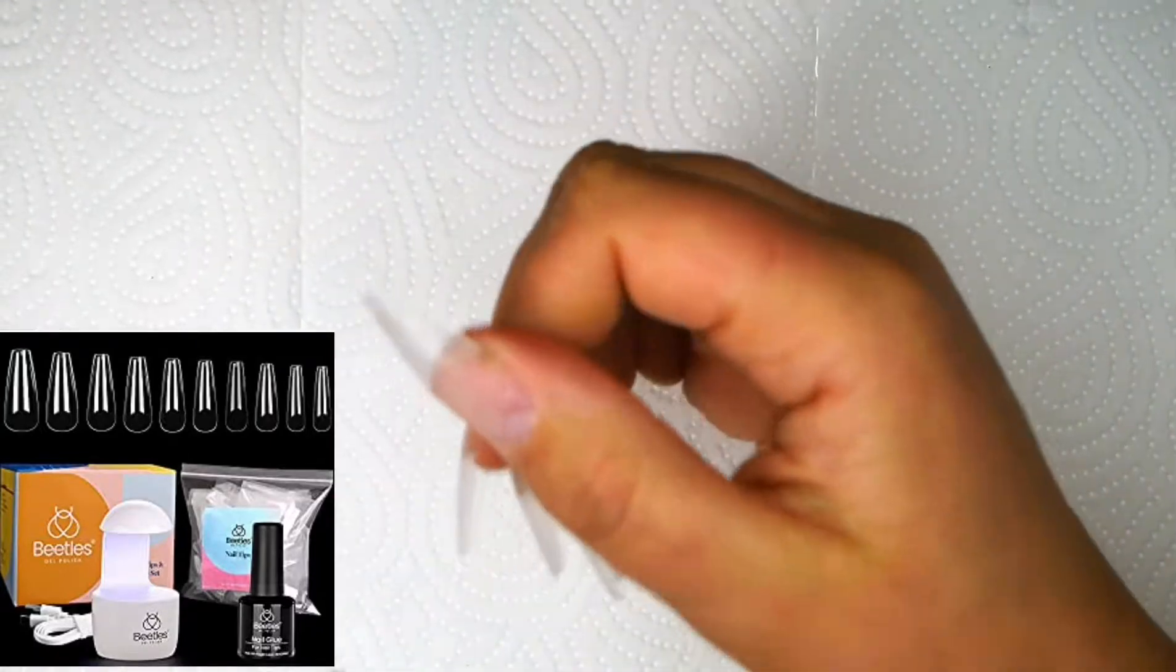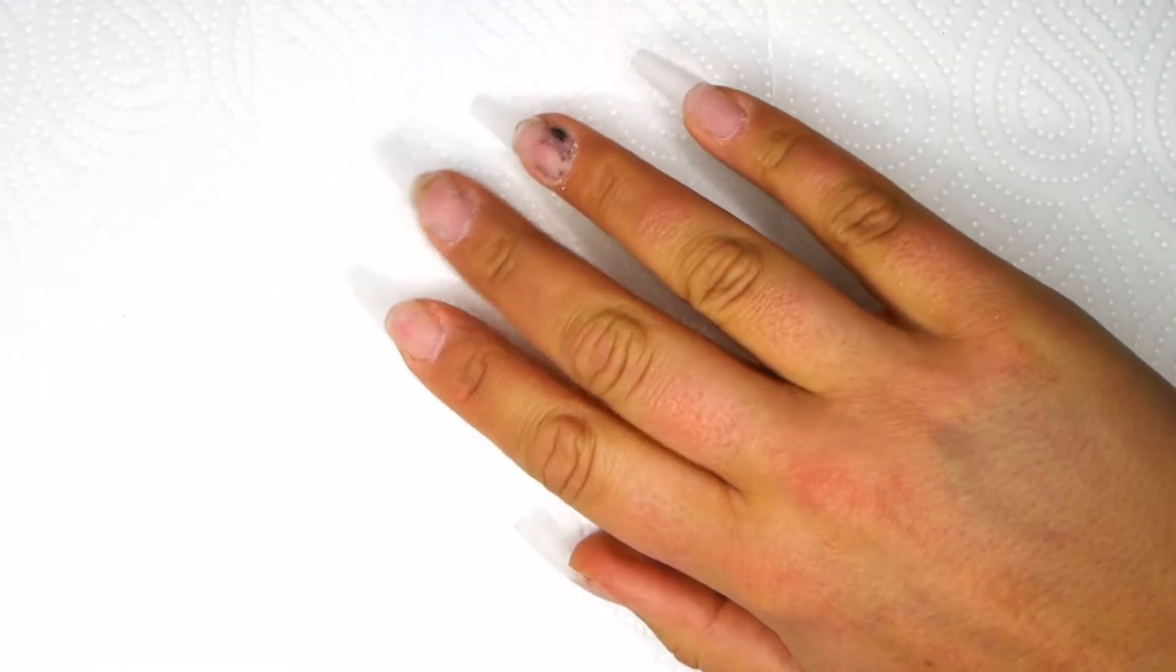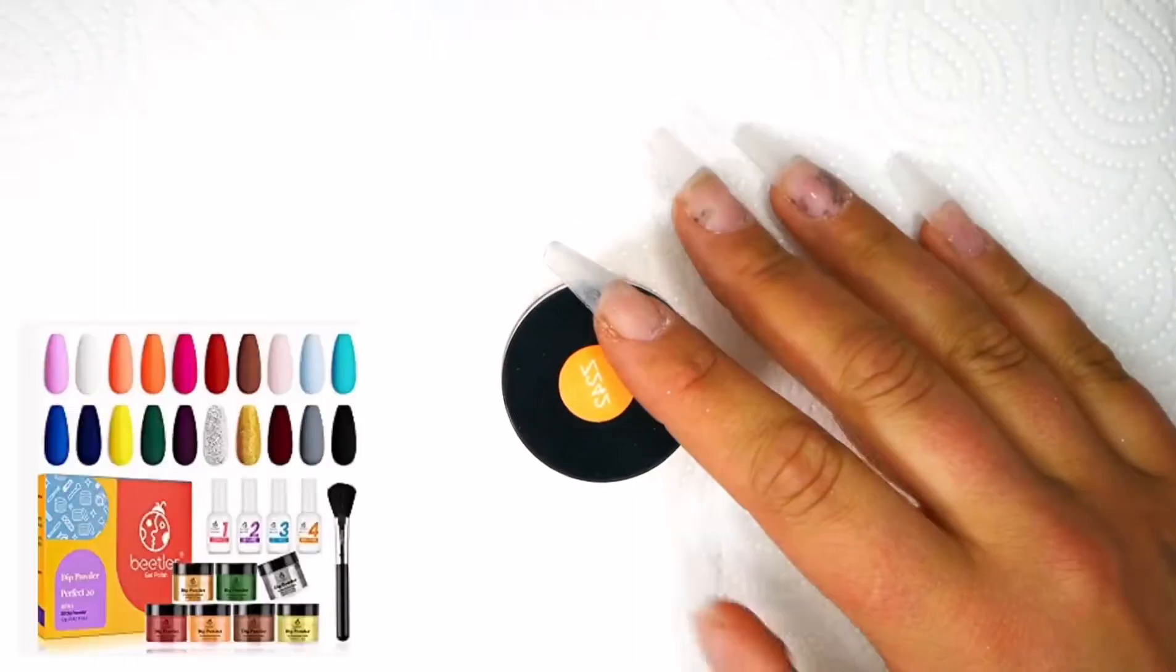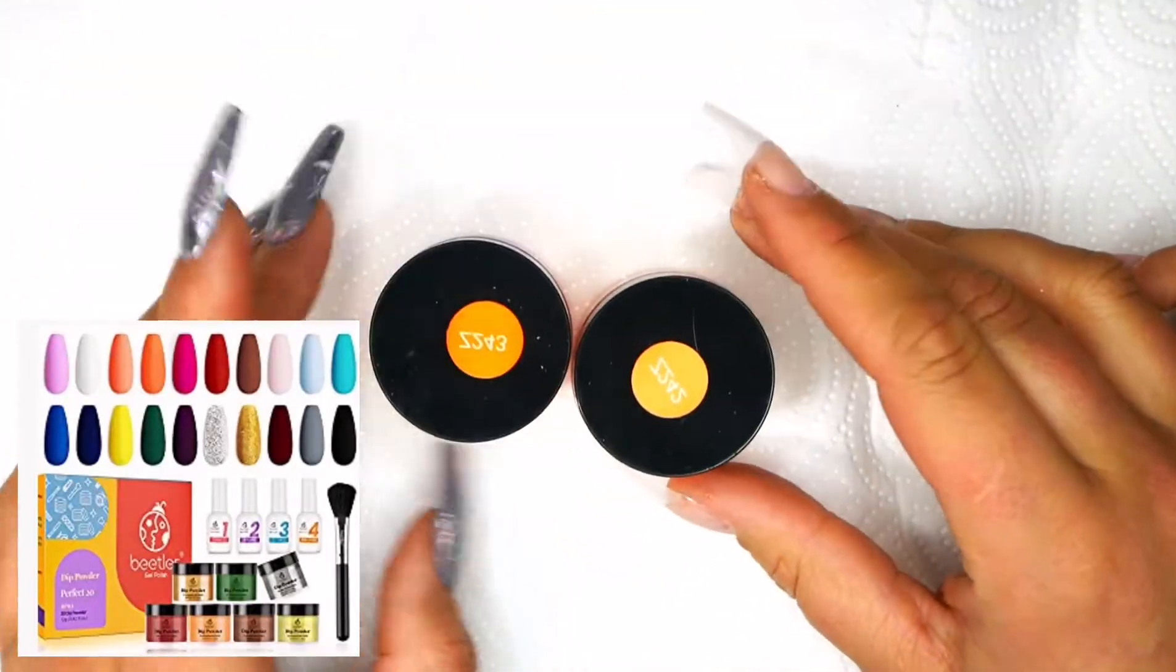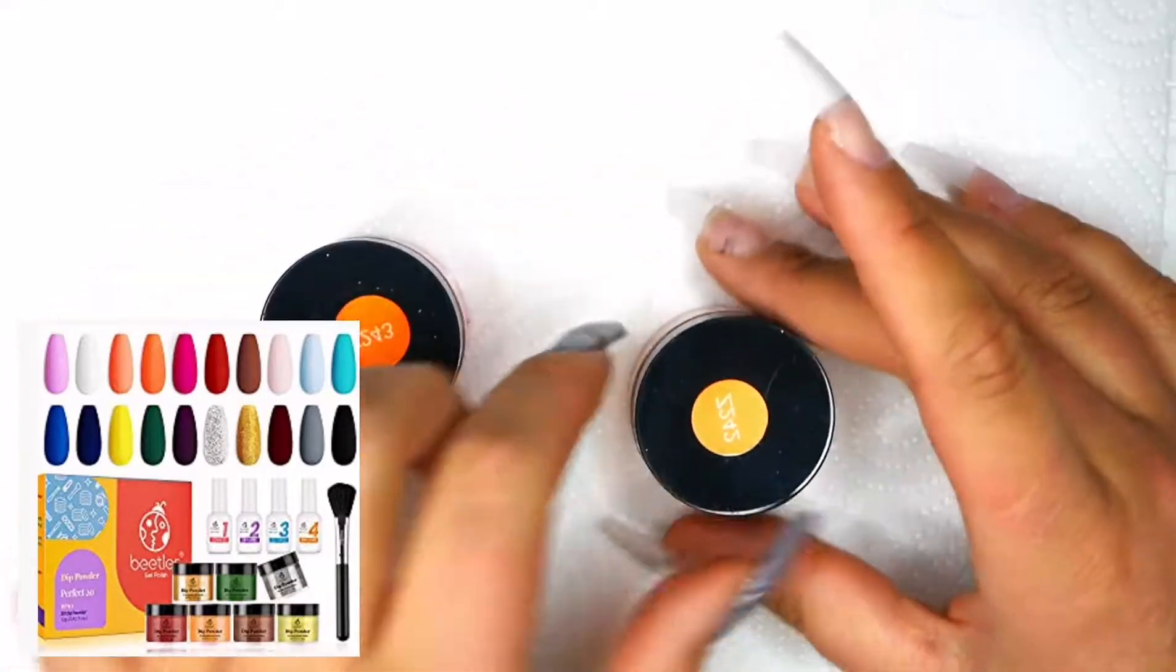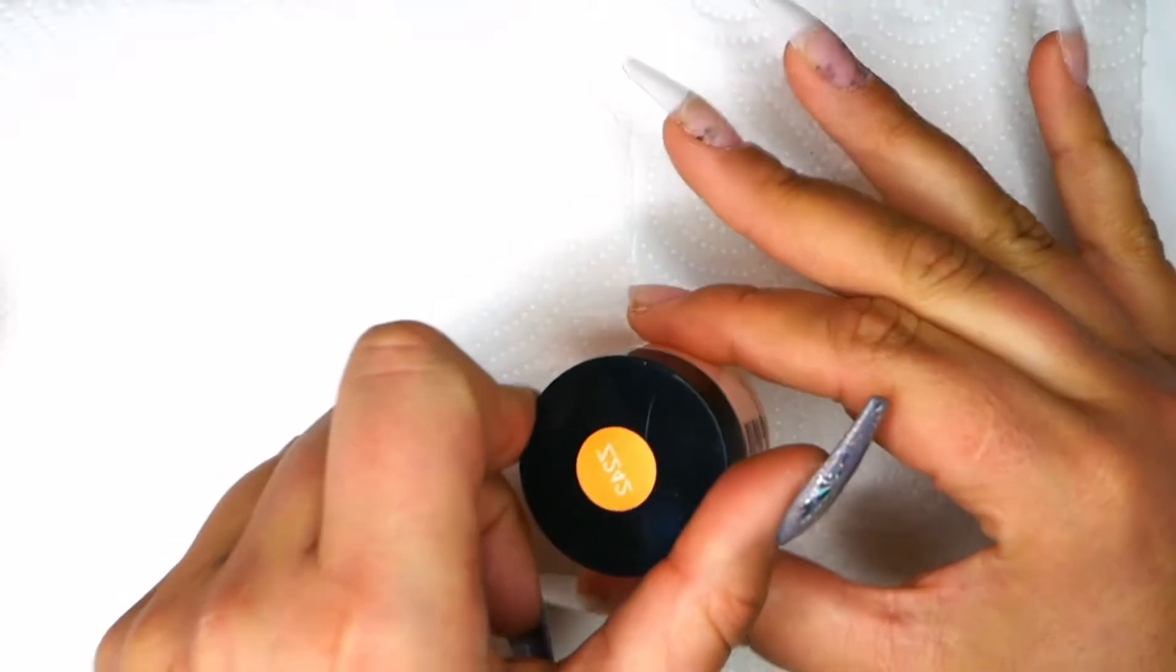I've got on full cover tips from Beetles and I've buffed them because we'll be using gel and gel won't adhere to a shiny surface. I picked out two gorgeous dip colors from Beetles, and we're going to be using these today with a base gel and we are going to combine them to turn them into like a colored overlay on these tips.